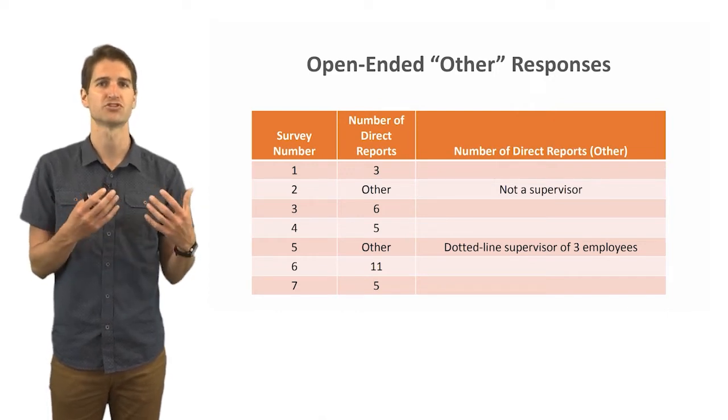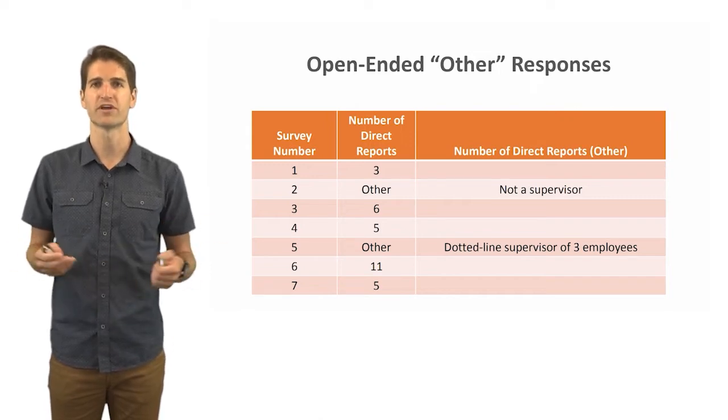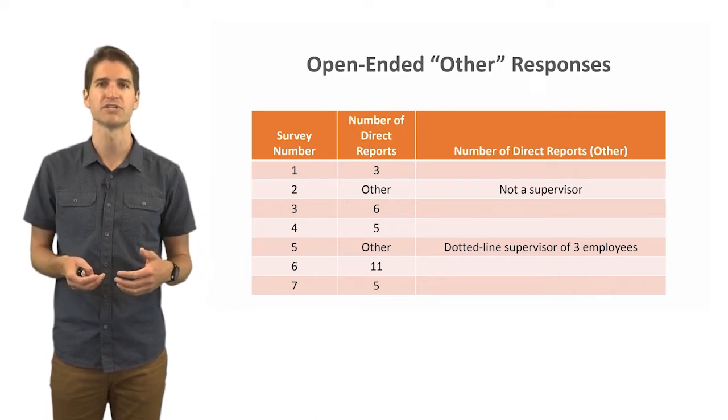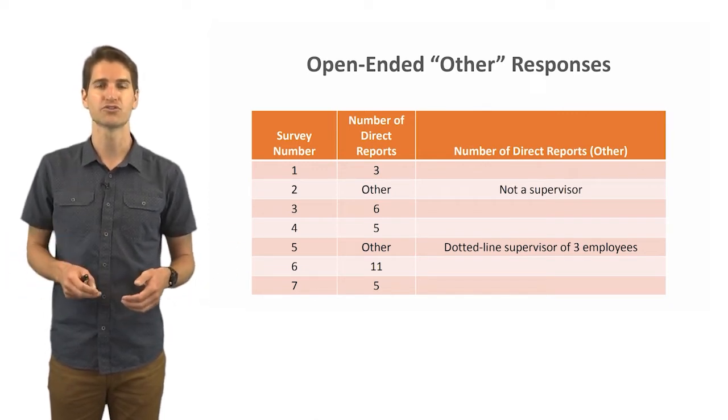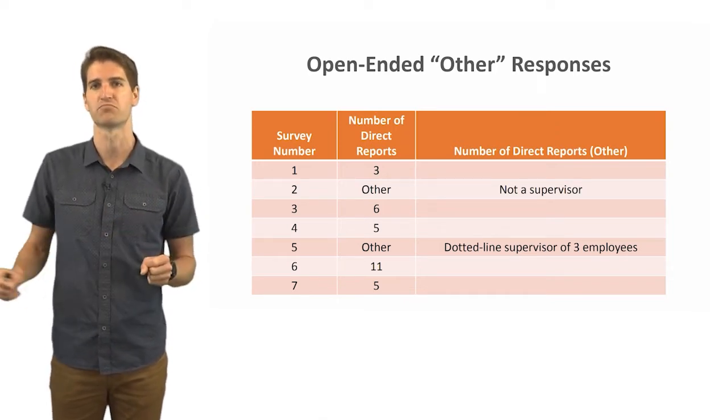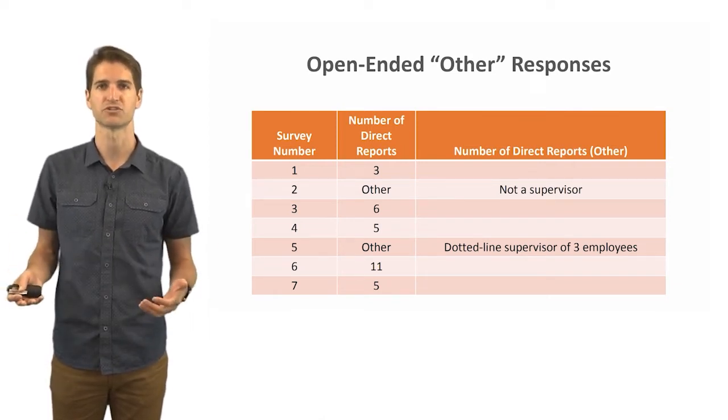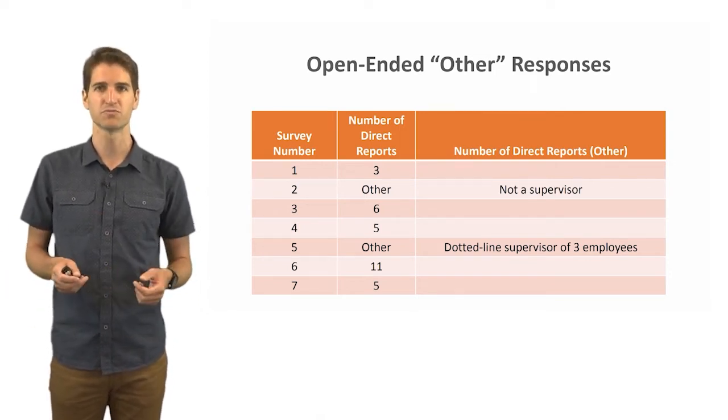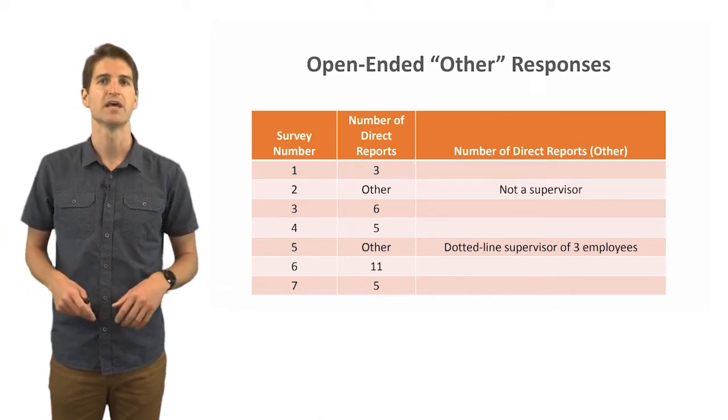In this data table we have the survey numbers—these are seven different surveys that were administered—and then one of the survey questions, let's assume, is what is the number of direct reports that you have as a supervisor. You can see that some people have three direct reports, some people have one, one person has up to 11. Notice there are two other entries, and so what this would do typically in a survey is that someone would then click on other and it would branch them to an open-ended box where they could then write in a more specific response that explains their individual unique situation.